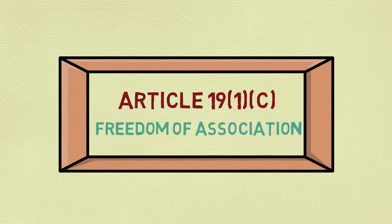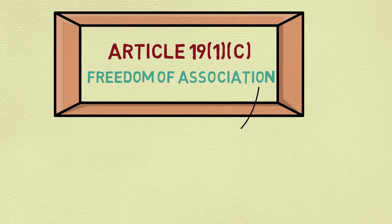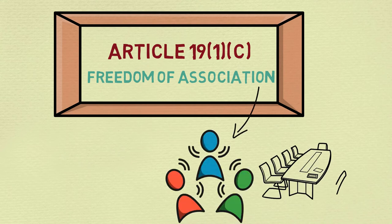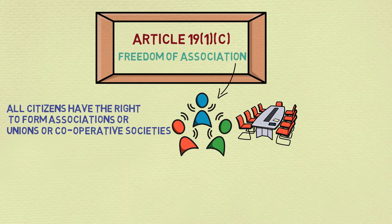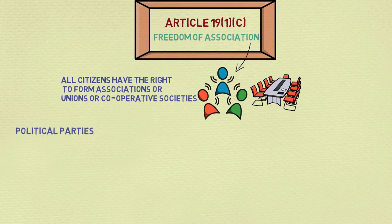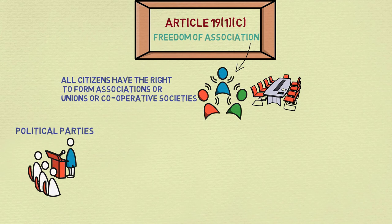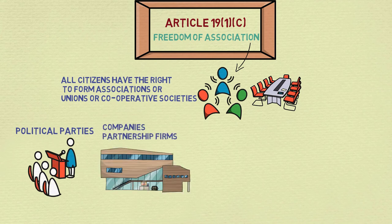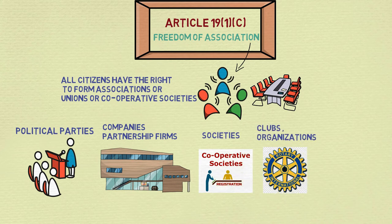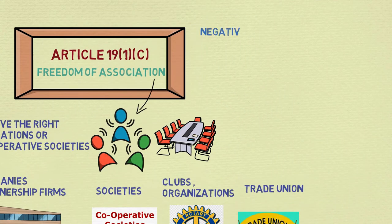Now, Article 19(1)(c): Freedom of Association. Association means forming a group or a body of persons. According to this article, all citizens have the right to form associations or unions or cooperative societies. This includes the right to form political parties, companies, partnership firms, societies, clubs, organizations, trade unions, and so on.